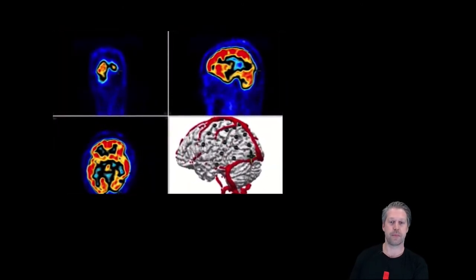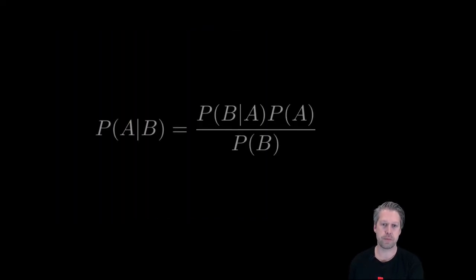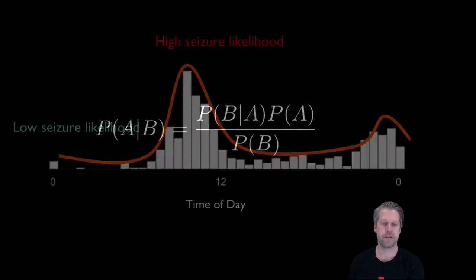Crucially, treating forecasts as probabilities enables models to be much more flexible. Models can include prior knowledge that adjusts the assessment of seizure likelihood.